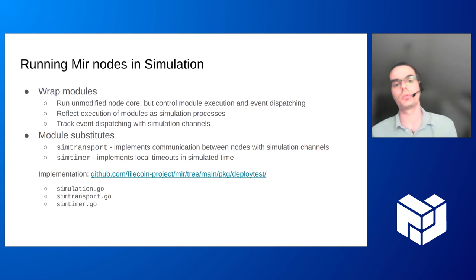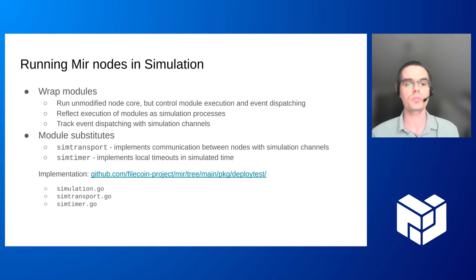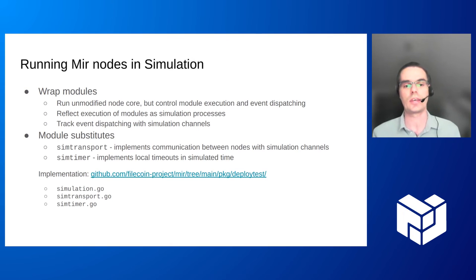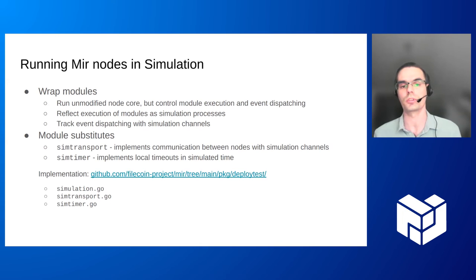So how does this help to run MIR nodes in reproducible integration testing? We wrap all modules of a MIR node, running the unmodified node core and unmodified module code, but wrapping the modules so we get control of module execution and event dispatching. Each event handling happens as if it were instantaneous, but we can also introduce random delays in virtual time to simulate modules taking longer to execute. Since modules communicate only through the node core, we have full control over event dispatching and can schedule module execution with the simulation framework.